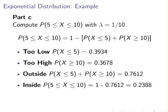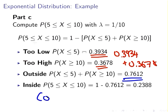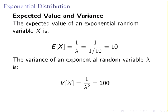The probability of being too low, P(X ≤ 5), was 0.3934 from Part A. The probability of being too high, P(X ≥ 10), is 0.3678 from Part B. Adding those together gives the probability of being outside the interval: 0.3934 plus 0.3678 equals 0.6612. The probability of being inside the interval is the complement: 1 minus 0.6612 equals 0.2388, or about 23 percent.